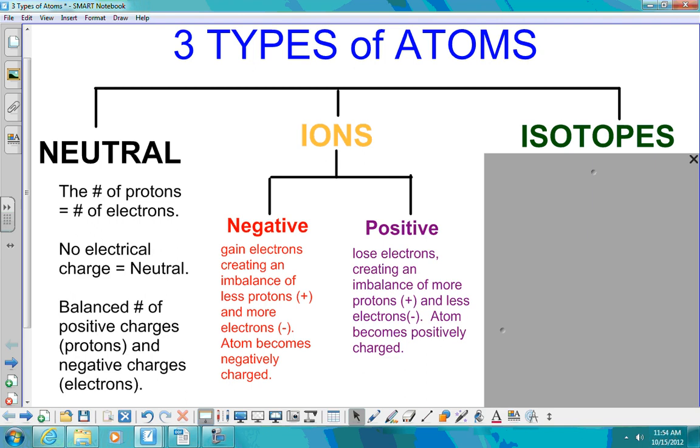The opposite of that is a positive ion. So when a neutral atom loses an electron, there is now an imbalance and there are more protons making it positive and less electrons.